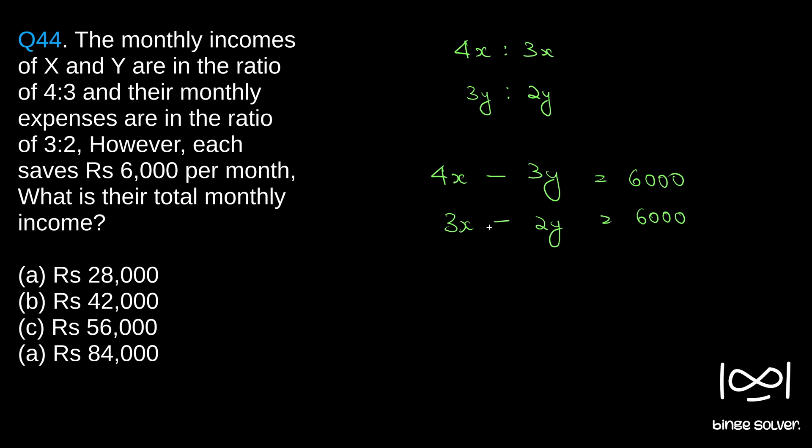First, multiply the first equation with 2. We get 8x minus 6y equals 12,000. We will call this equation 1. 2 into 1 gives 8x minus 6y equals 12,000, and 3 into 2 gives 9x minus 6y equals 18,000.